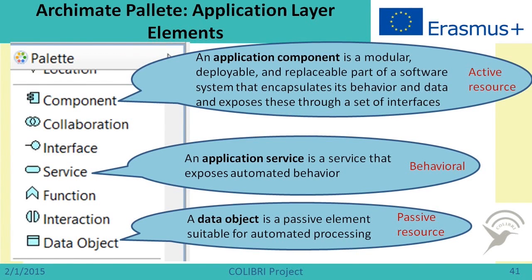When we speak about application layer elements, here we can see software components, services provided by software components, and data objects, which are passive elements suitable for automated processing. Usually data objects correspond to particular business objects. An application component is an active resource because it does something. An application service is a behavioral element because it shows the action. A data object is a passive resource — it doesn't do anything itself but is used in different activities or processes.